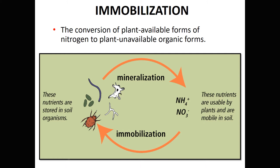The last avenue of loss is immobilization — really not a true loss; nitrogen just gets tied up and the plant can't access it, so think of it as a temporary loss that we can get back. Immobilization is a conversion of plant-available nitrogen to plant-unavailable forms — from inorganic nitrogen, which is plant available, to organic nitrogen, which is plant unavailable. This involves a microbial population, so we need an environment for microbial activity: oxygen, temperature, moisture.